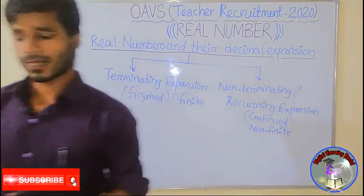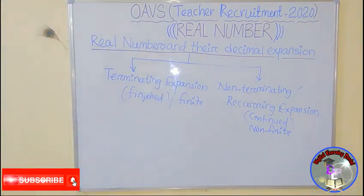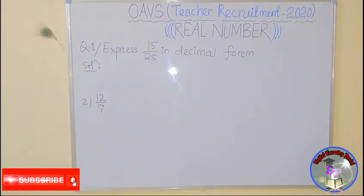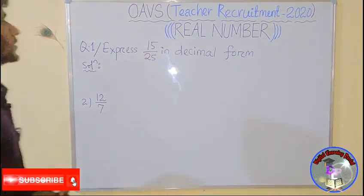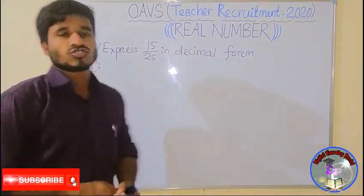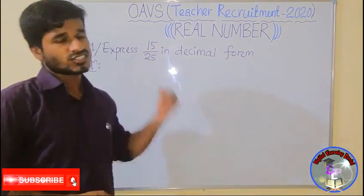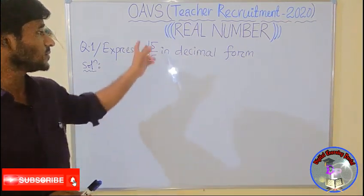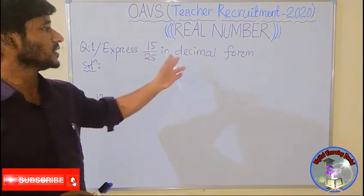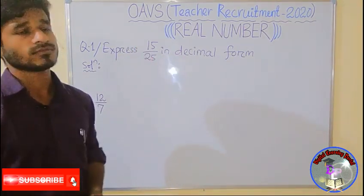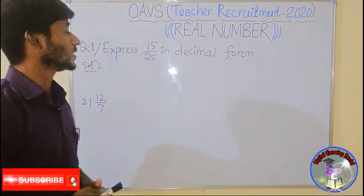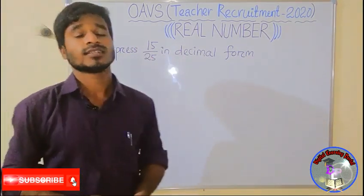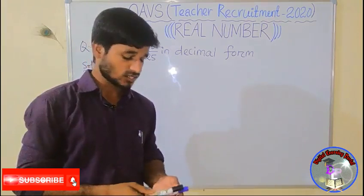So friends, let's solve some questions. The first question: express 23 by 25 in decimal form. So we divide 23 by 25.